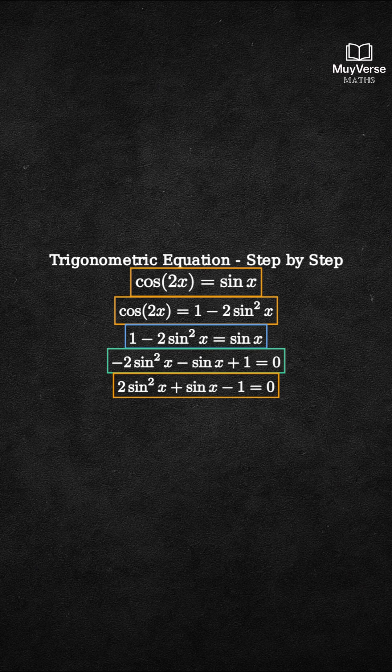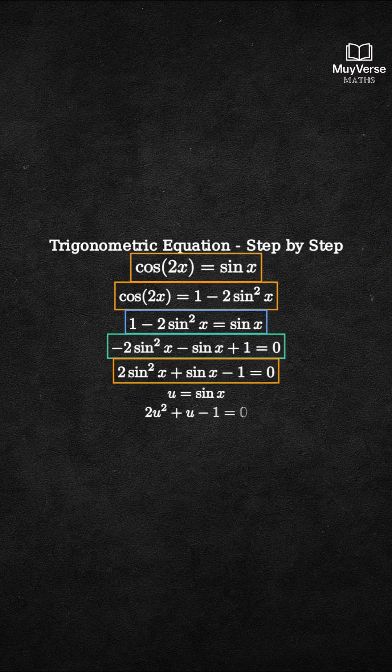Step 3: Let u equal sine x. Then the equation becomes 2u squared plus u minus 1 equals 0. Use the quadratic formula.